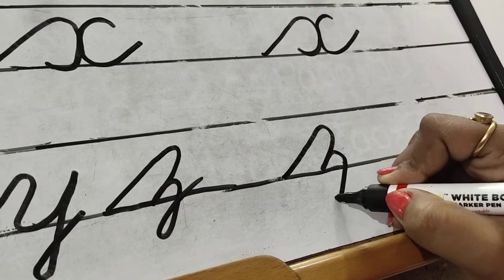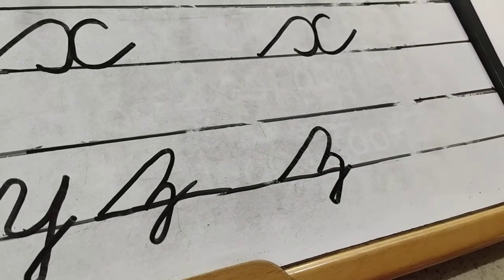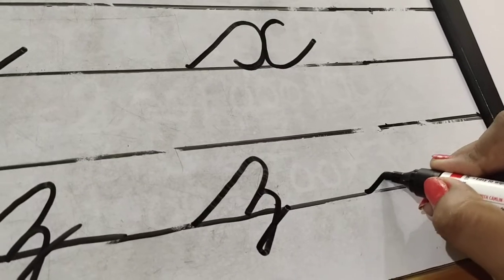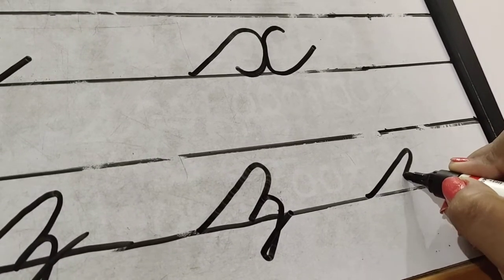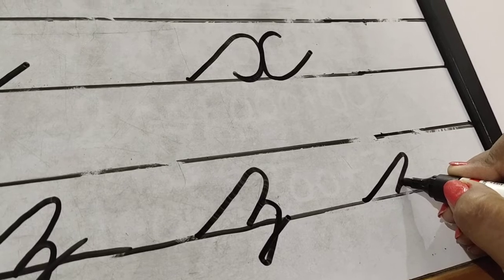Y ki tarah, X ki tarah. Once again, lower line touch, slanting line, make a curve, touch, thoda sa vaapis, bas. Uske baad, again, niche aake and cross.